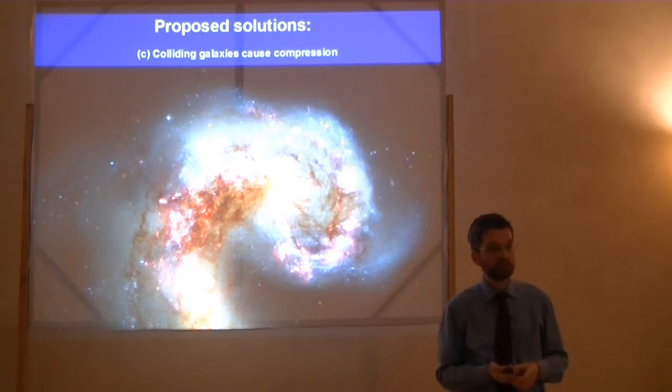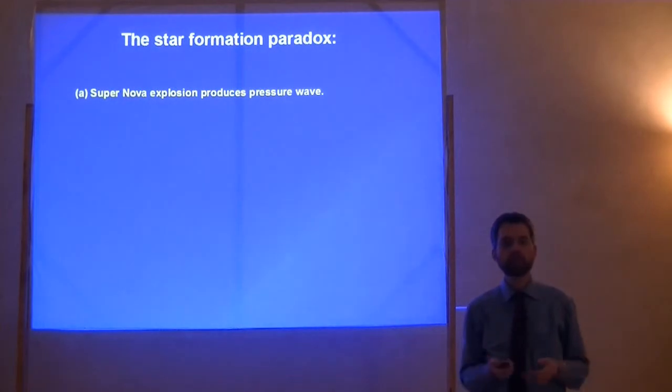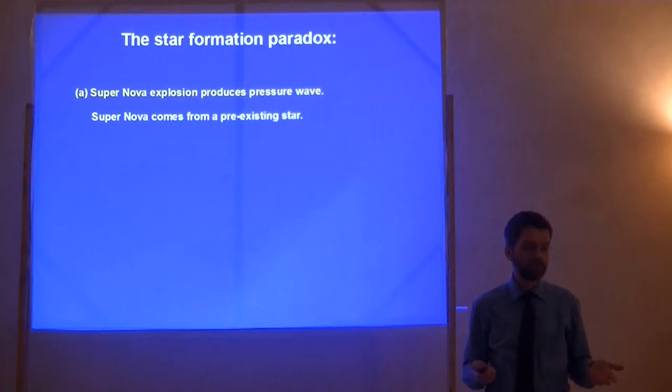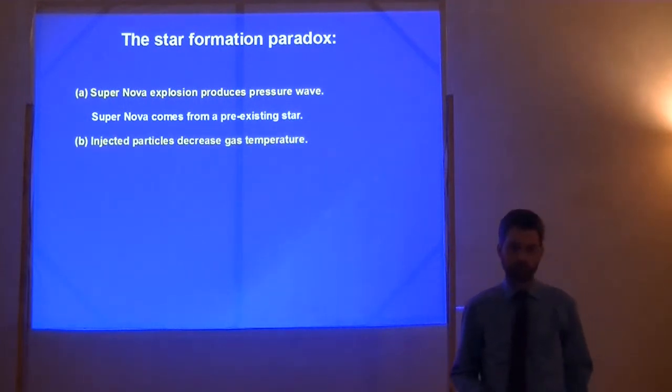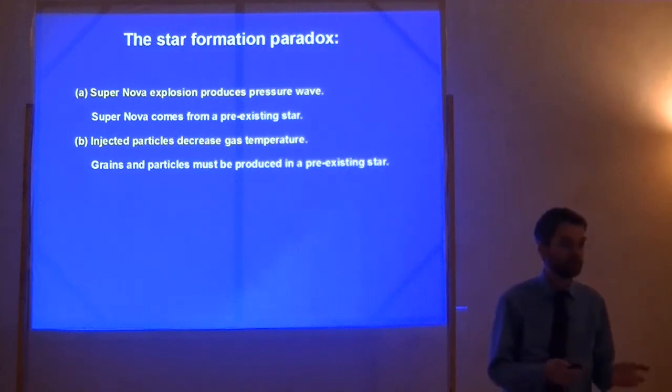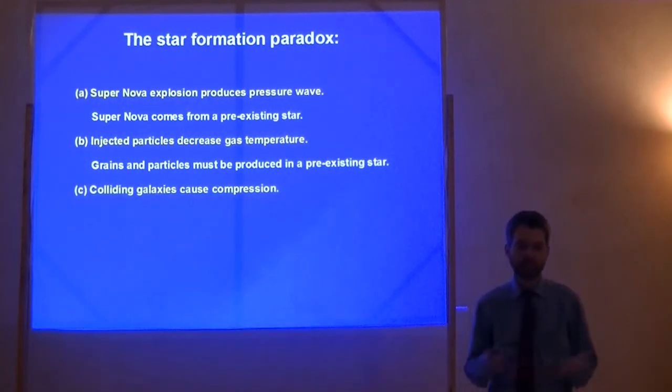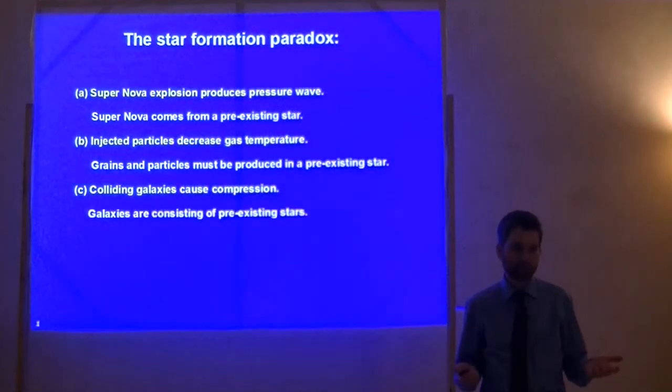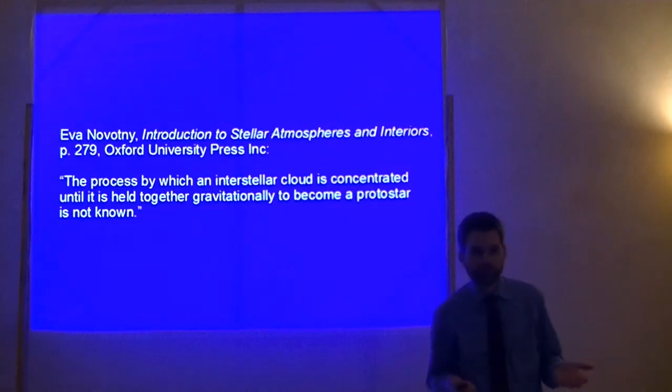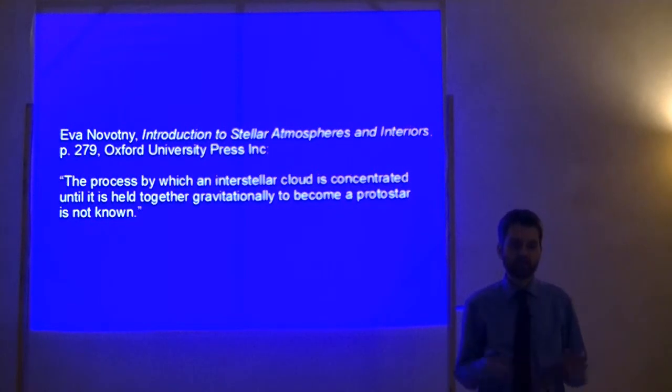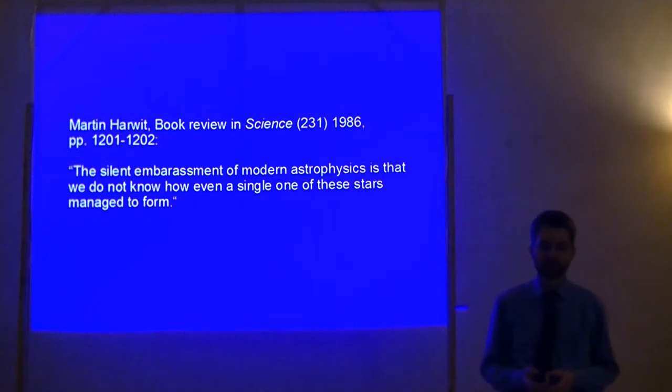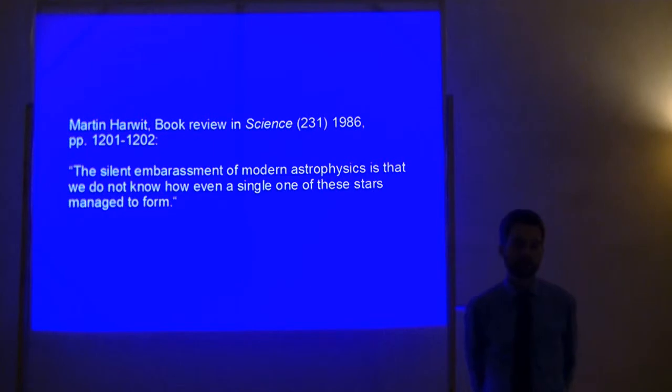Now, let's examine these three ideas. The first is the supernova explosion. Can this be the explanation for the first star? Well, a supernova is a pre-existing star. It is an exploding star. So it cannot explain how the first star came in existence. Injected particles. Well, grains and particles can only be produced in a pre-existing star. So this is also ruled out. And the colliding galaxies causing compression. A galaxy is composed of pre-existing stars. So you see, it's true what Eva Novotny writes in her textbook Introduction to Stellar Atmospheres and Interiors. The process by which an interstellar cloud is concentrated until it is held together gravitationally to become a protostar is not known.